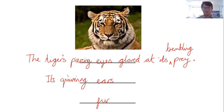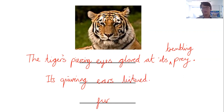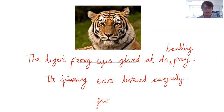Now for the ears. I'm going to use the word 'quivering' — its quivering ears listened carefully. Actually, I don't like 'quivering' so much anymore. I'm going to change it to 'twitching.' I think that gets a better sense of the image I want to create for the reader — its twitching ears listened carefully.